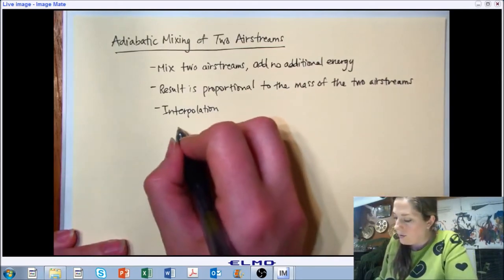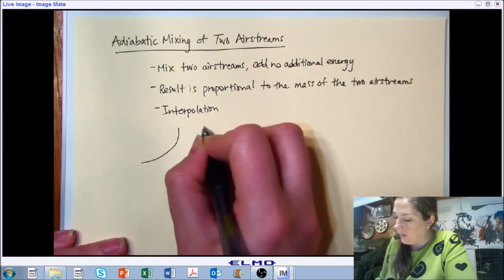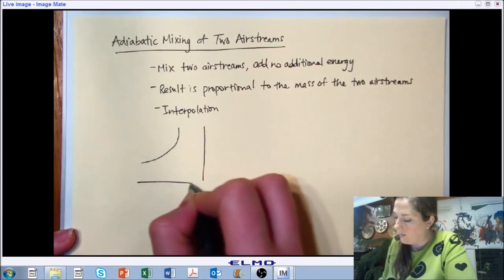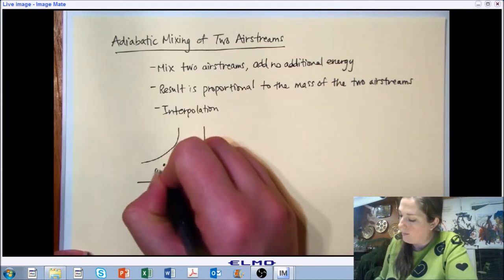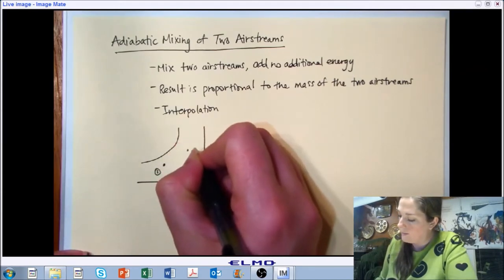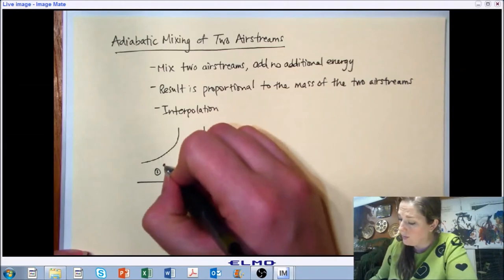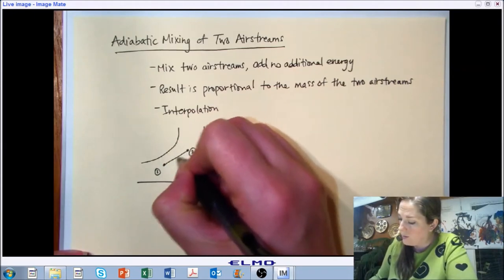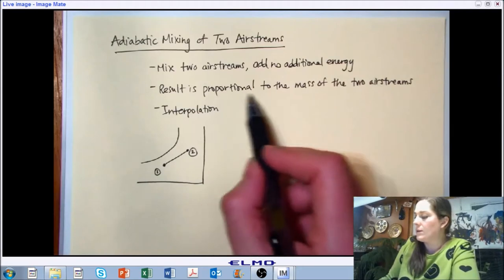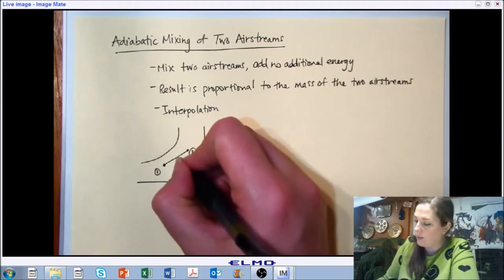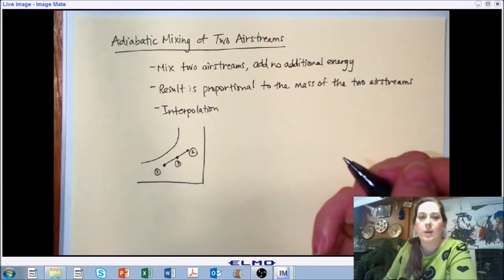We're going to reach our result by using interpolation. So on the psychrometric chart we're going to do our little simple sketch here and we have two points. We're essentially going to draw a line between those two points and look at the proportion of the mass of the two airstreams. Let's just say they're equal so we end up halfway in the middle as our final state point.